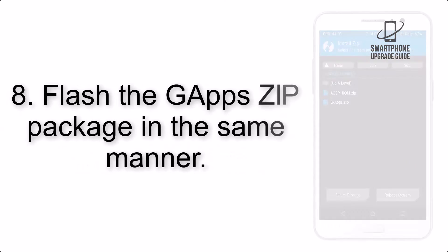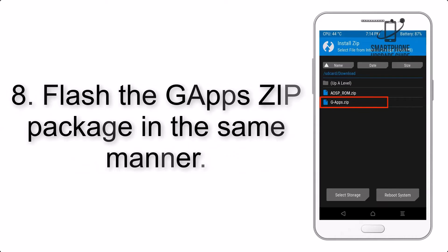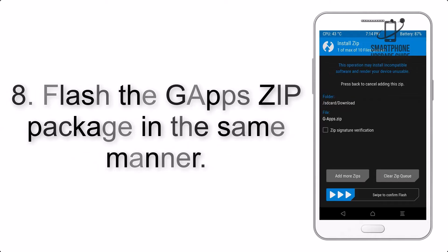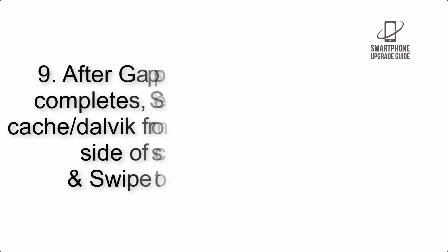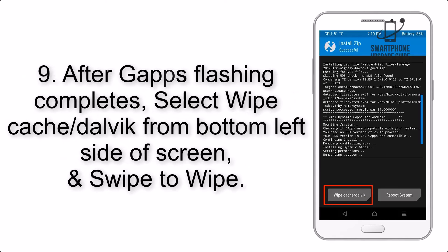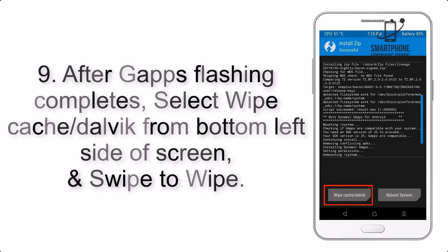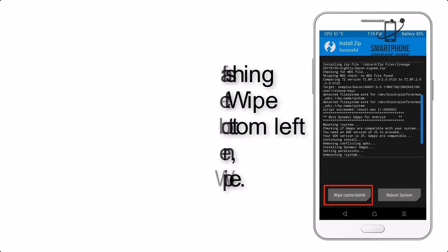Step 8: Flash the GApps zip package in the same manner. Step 9: After GApps flashing completes, select Wipe Cache and Dalvik from the bottom left side of the screen, and swipe to Wipe.